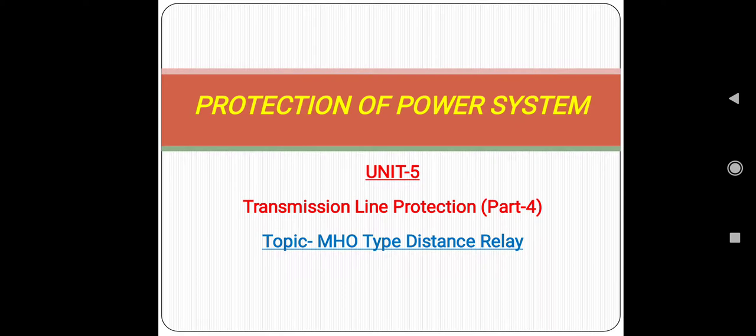In an earlier lecture I told you some drawbacks occur in reactance type distance relay. The reactance relay is basically not capable of discriminating the faults which occur either in the protected zone or outside the protected zone. Therefore the reactance type distance relay needs a directional unit that is inoperative under normal load conditions.